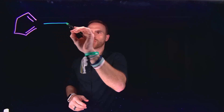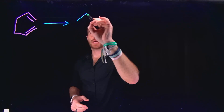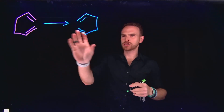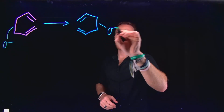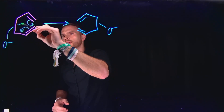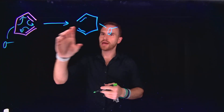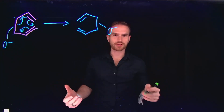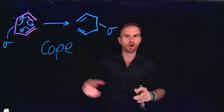Sigmatropic rearrangements come from the root word tropos, which in Greek means change. So we're getting a change in the location of a sigma bond — sigmatropic. In doing so, we generate a molecule which looks very similar, but we have broken one sigma bond and made an entirely new sigma bond. The pi electrons allow us to delocalize those electrons to generate this molecule. When all six members of this rearrangement are carbon atoms, that's called a Cope rearrangement.